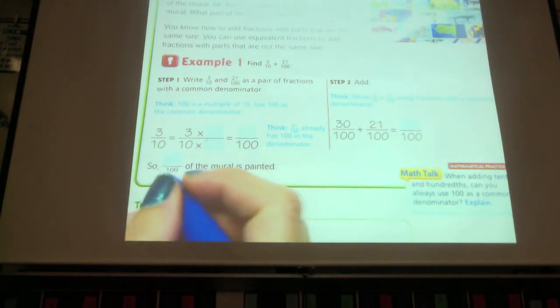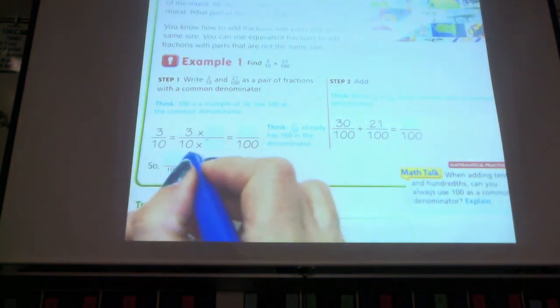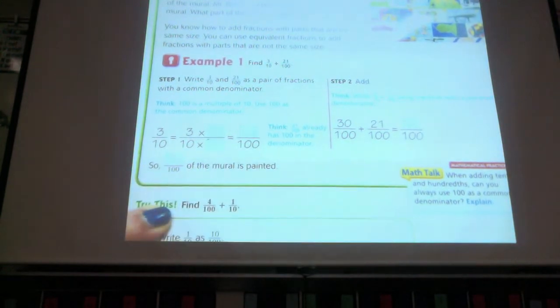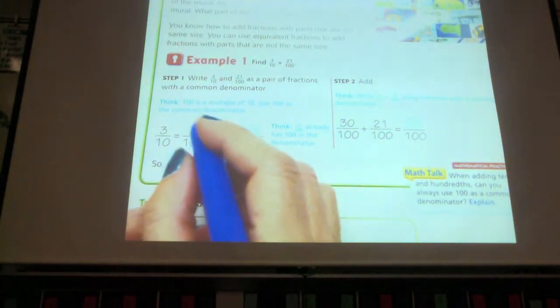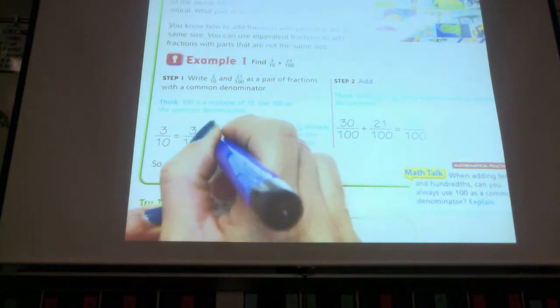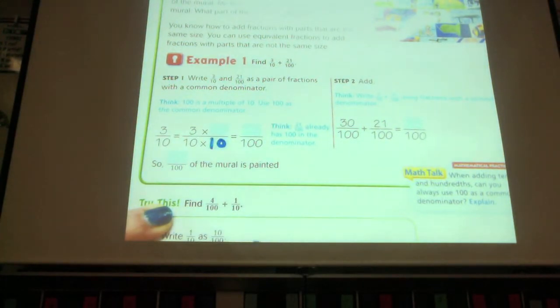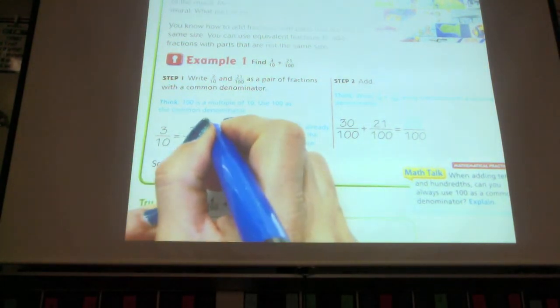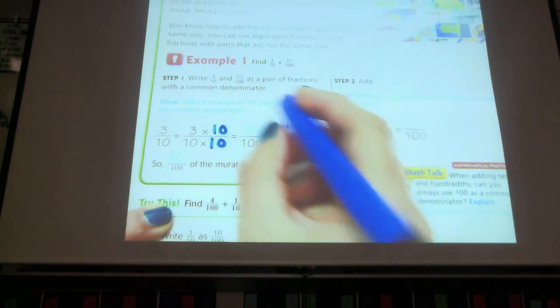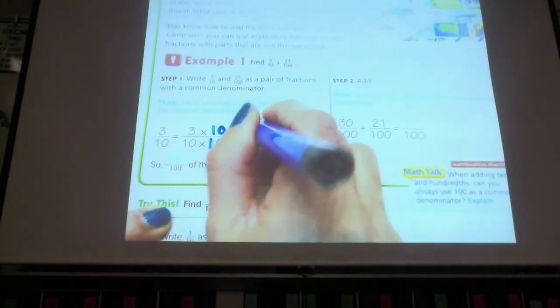I know how to do that. I shouldn't see pencils going. If I multiply ten times a number, I get a hundred. What number do I multiply it by, class? Ten. So, if I multiply the denominator by ten, I multiply the numerator by ten. So, three times ten is? Thirty. Thirty.